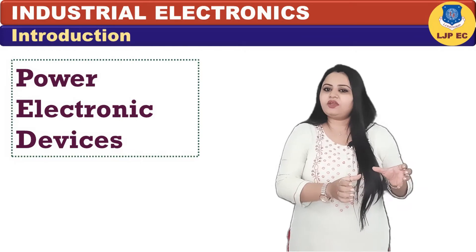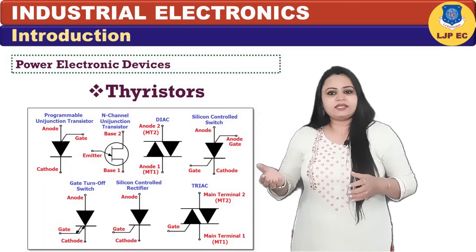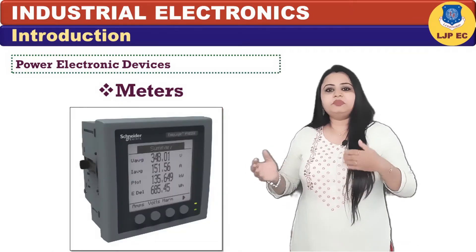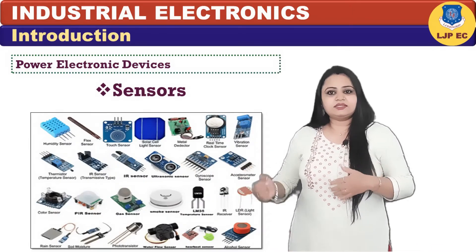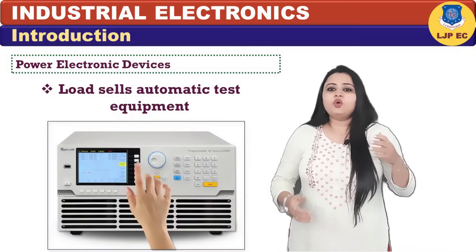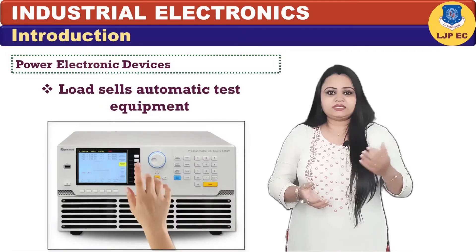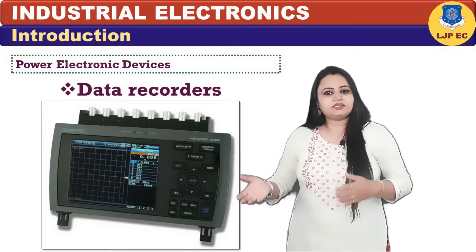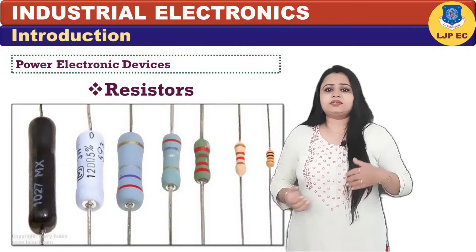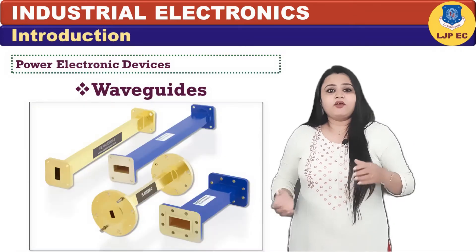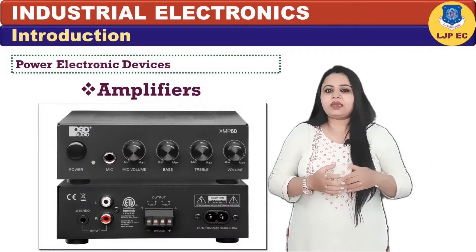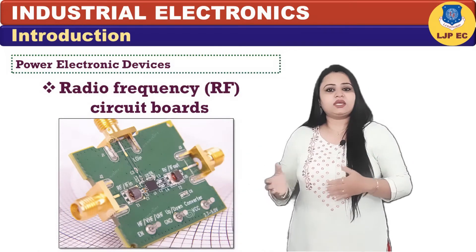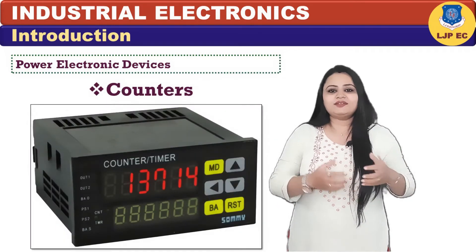Industrial electronics is a branch of electronics that deals with power electronic devices such as thyristors, SCRs, AC/DC drivers, meters, sensors, analyzers, load cells, automatic test equipments, multimeters, data recorders, relays, resistors, semiconductors, transistors, waveguide scopes, amplifiers, radio frequency circuit boards, timers, counters, etc.